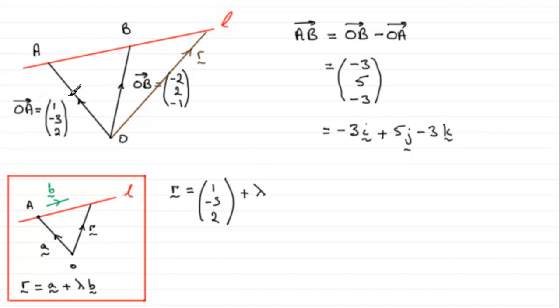in the direction of the line. We need a vector that is parallel to the line. Well, in the previous part, we worked out the vector A to B. That's a vector that's parallel to the line L. So if we took that, then we can write it either as a column vector or we could write it in i's, j's and k's. But since I've started using column vectors, we'll carry on with that. So it'd be lambda multiplied by (-3, 5, -3).